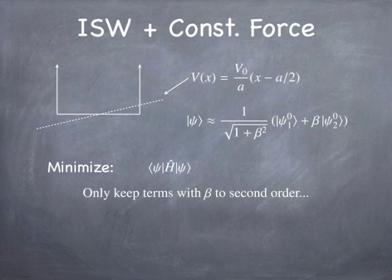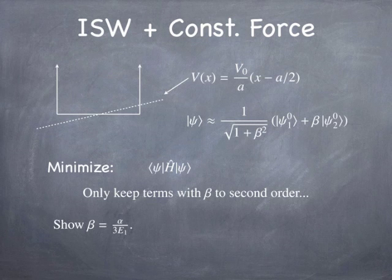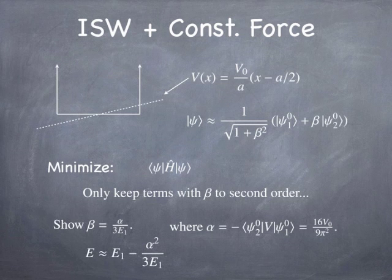You keep terms in the expectation value of the Hamiltonian up to second order in beta. I want you to show that beta turns out to be alpha divided by 3 times the energy of the ground state. That's the same result we got with degenerate perturbation theory. You can also show that the energy is the ground state energy minus alpha squared over 3 times the ground state energy. In other words, by adding this potential, the energy is actually lowered from the ground state energy.